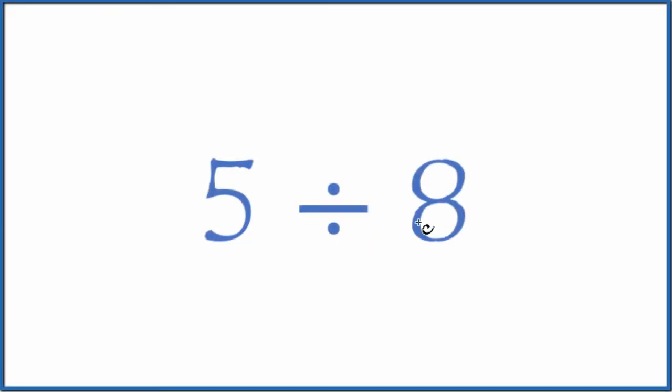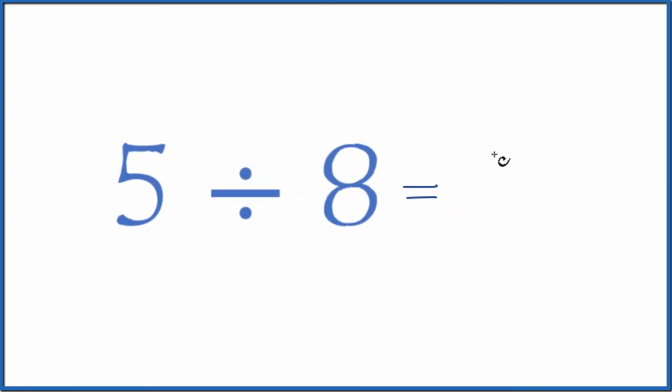Let's divide five by eight. There's a few ways we could do it. First off, we could just call it a fraction. Five divided by eight is five over eight.